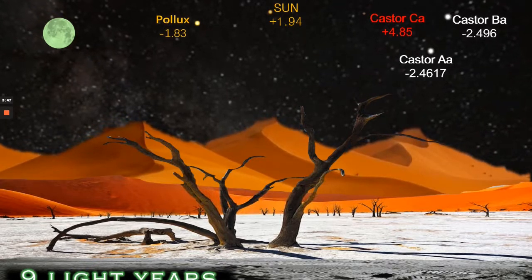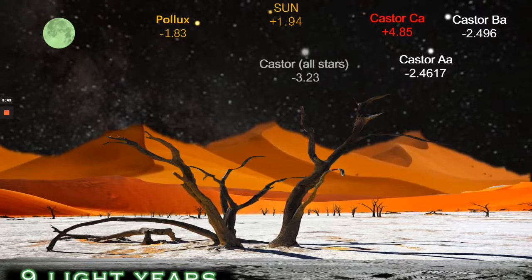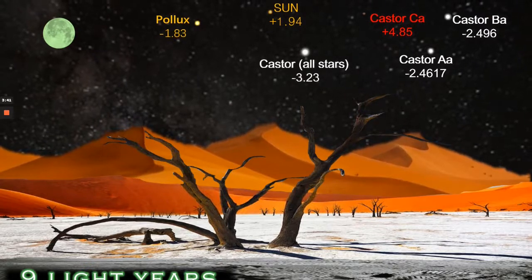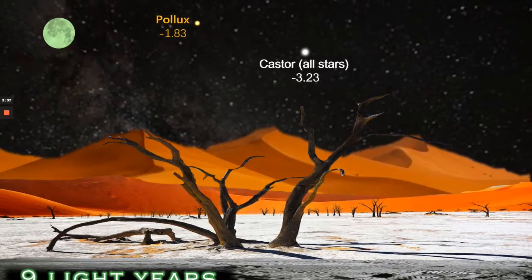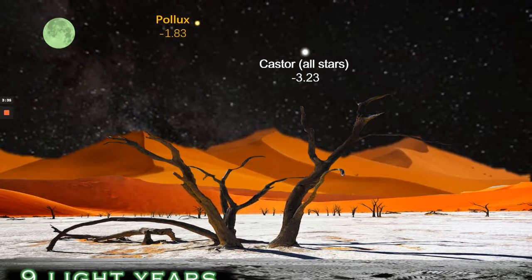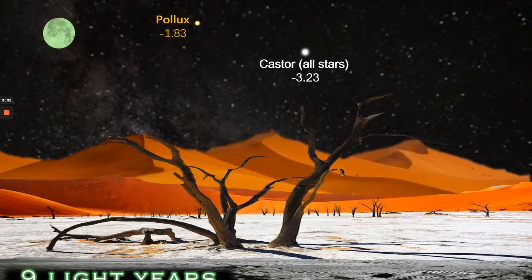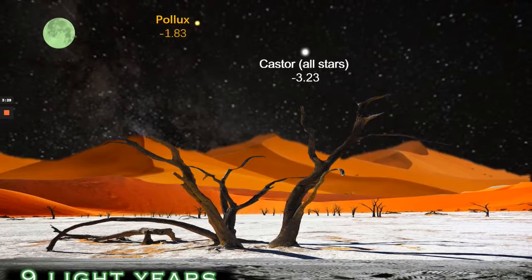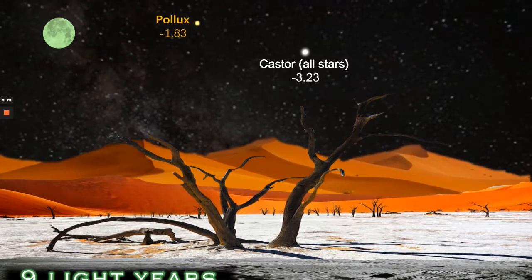However once we combine all the Castor stars which of course we can, their combined magnitude is around minus 3.23 which would be an extremely bright star and far brighter than any extra solar system body in our own skies. For reference of course the planet Venus at its brightest would be about minus 4.3 so the Castor system at from 9 light years distance would by far and away be the brightest star in the sky.